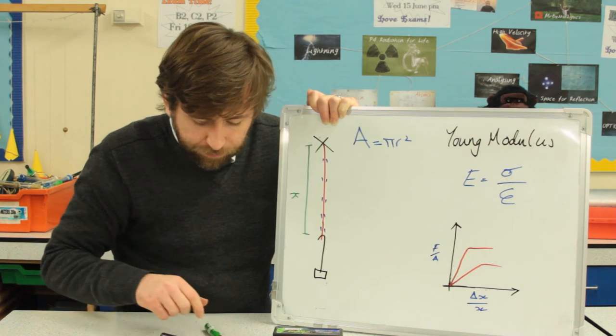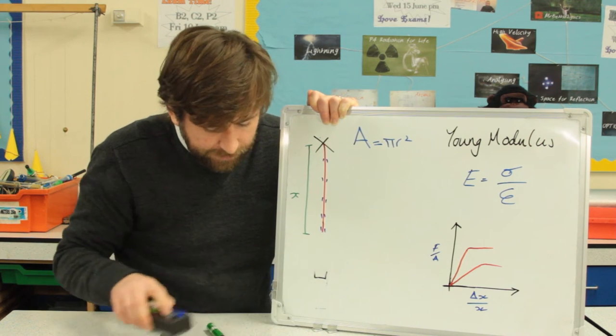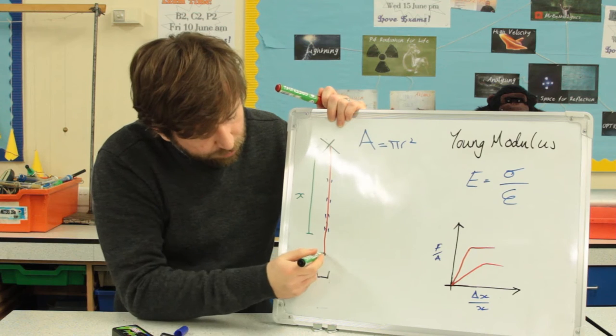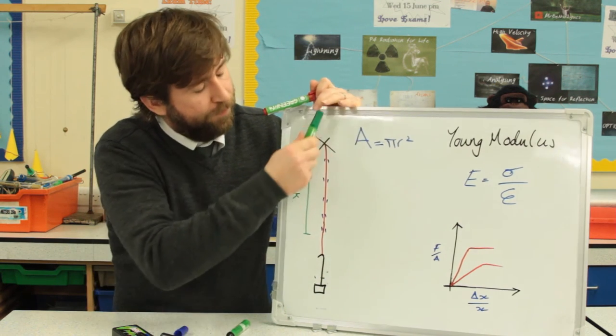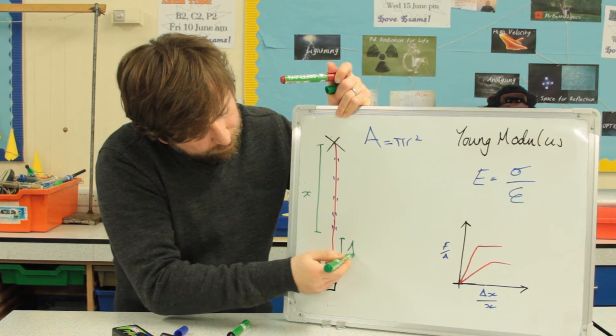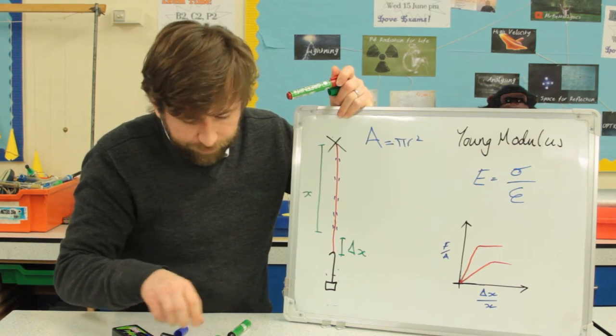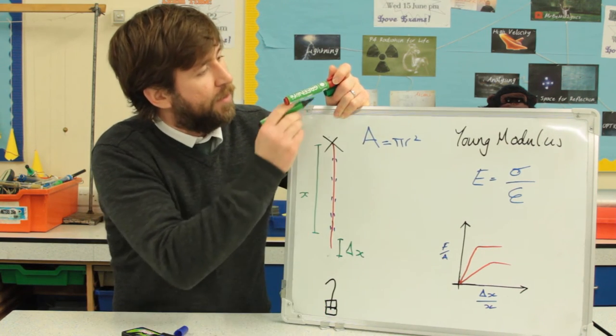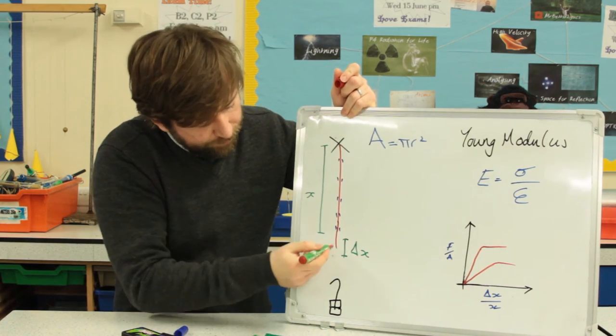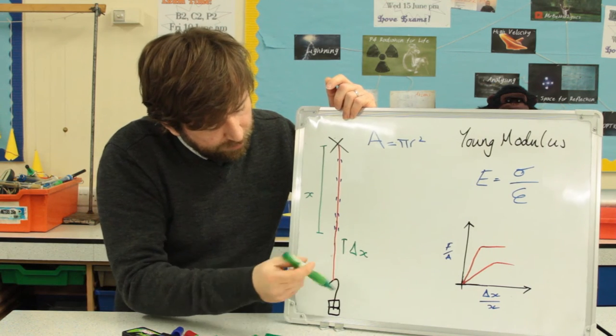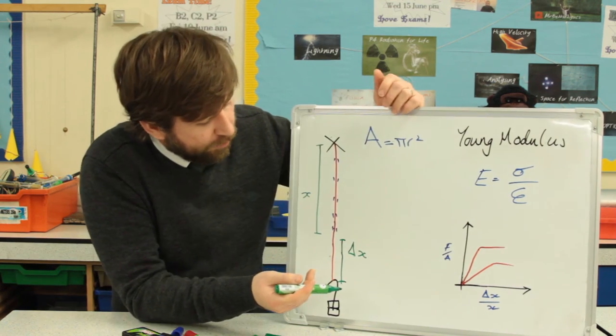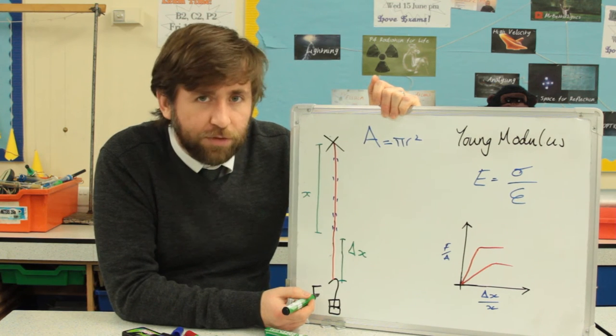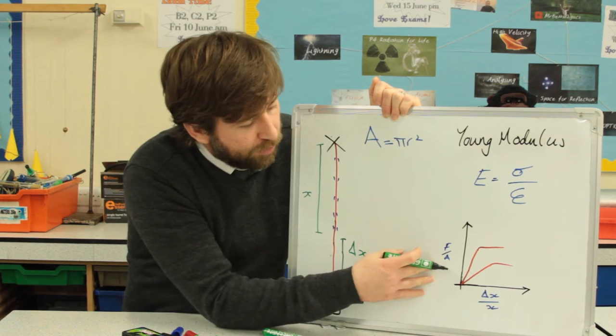Add one mass and the lace will extend. You measure that extension. And add another mass. It will extend more. Measure the new extension. And so on and so forth. Your slotted masses, each one being about 0.1 of a Newton, although you can be more accurate than that, is your value for F. And from all those measurements, you're going to plot yourself the graph.